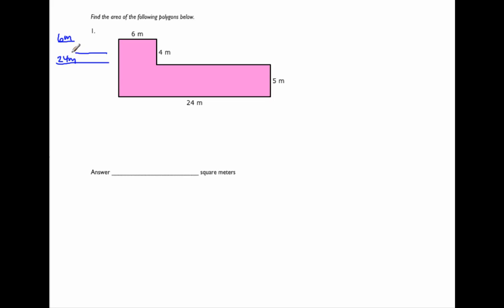To figure out the missing length, since it's one of the smaller lengths, we just take away the smaller length from the largest length. So 24 minus 6 is 18. This missing length is 18 meters — let's label that in.